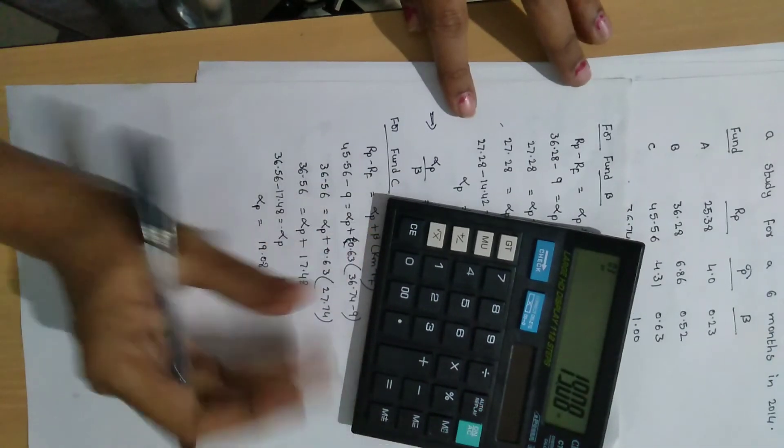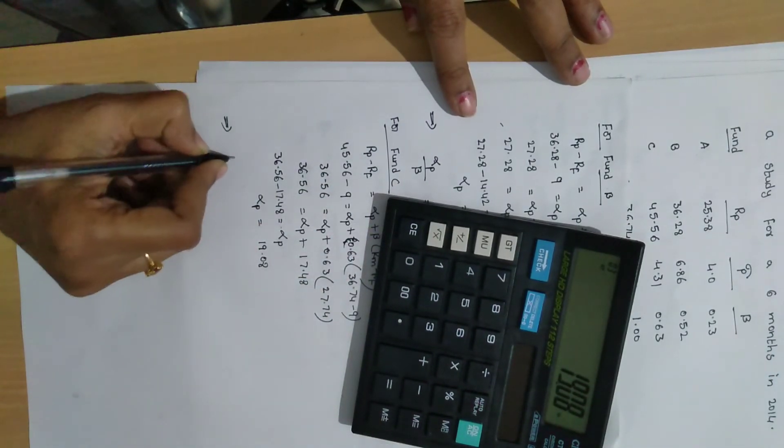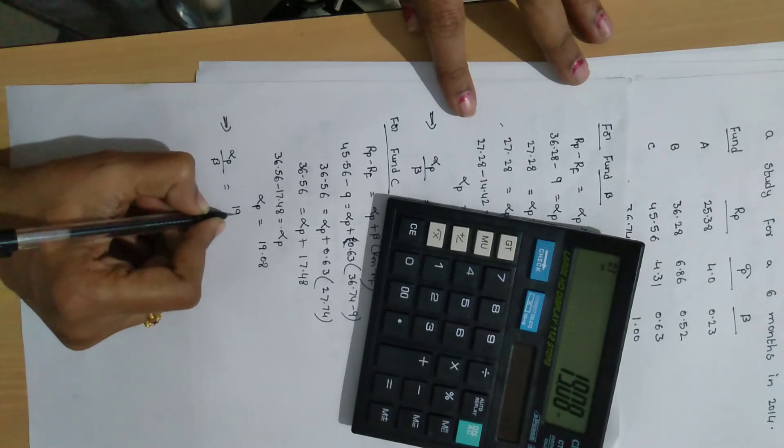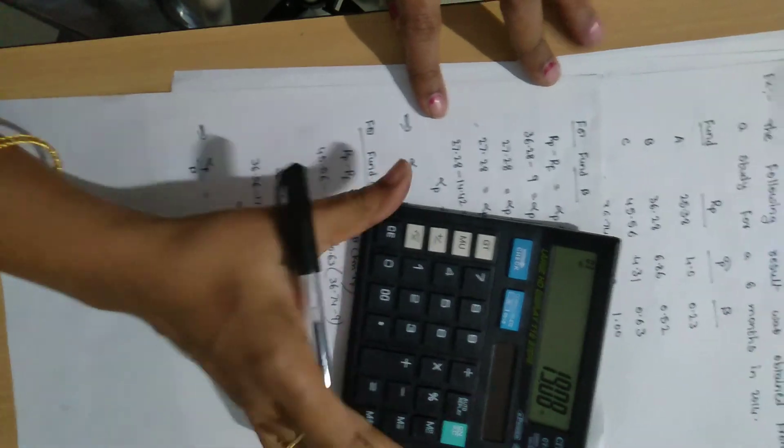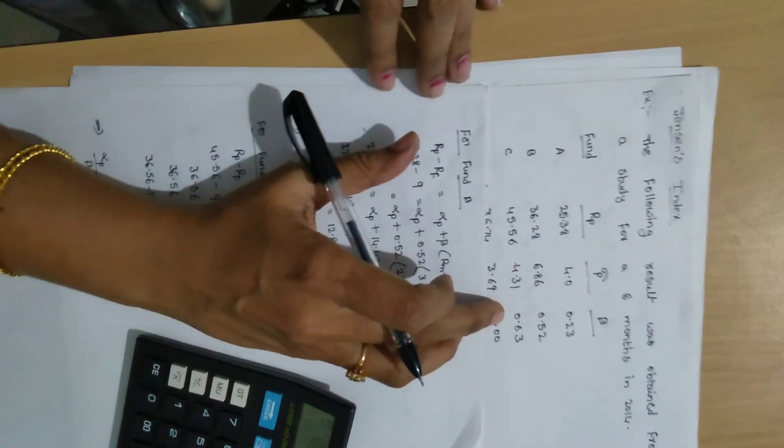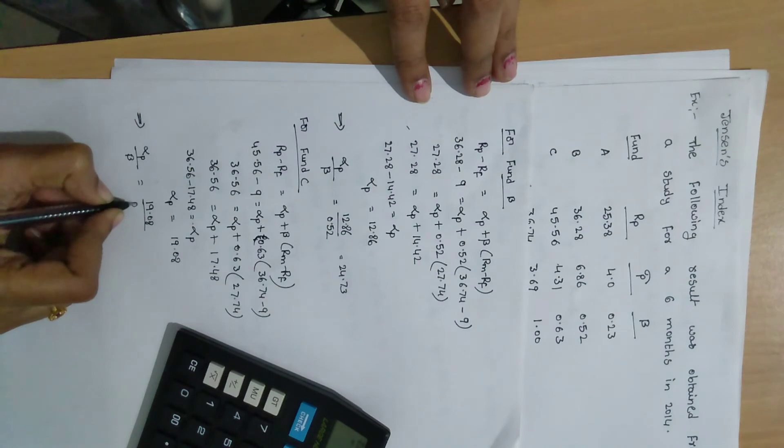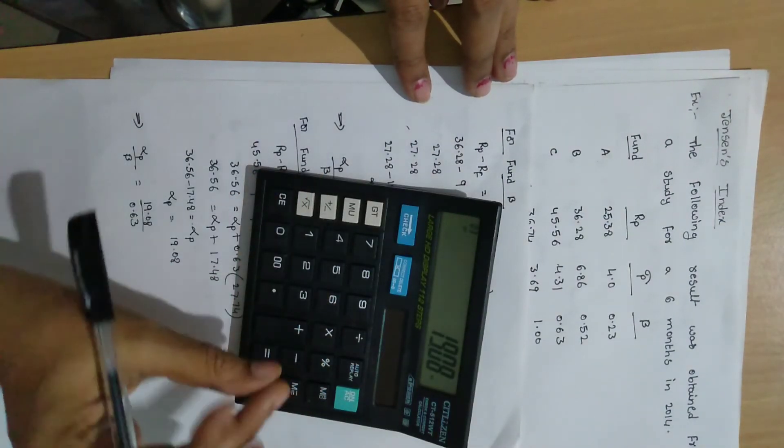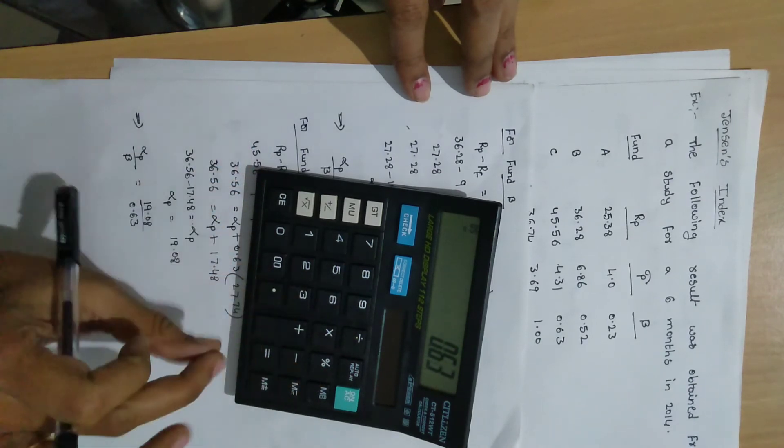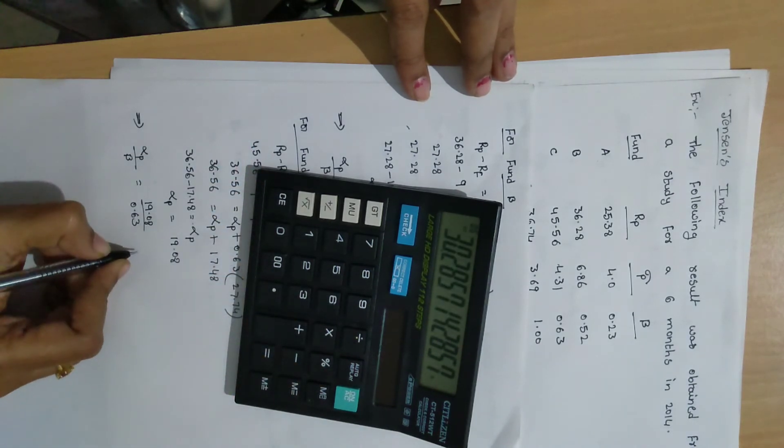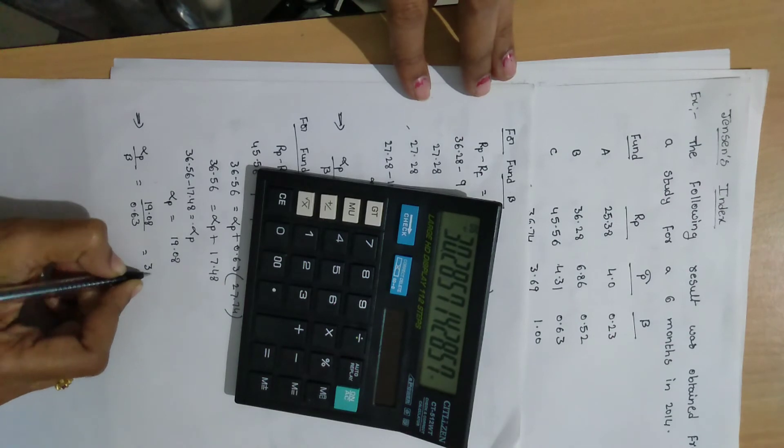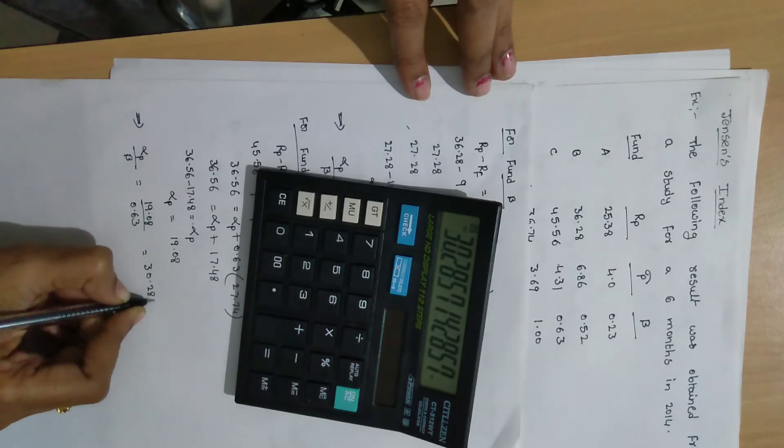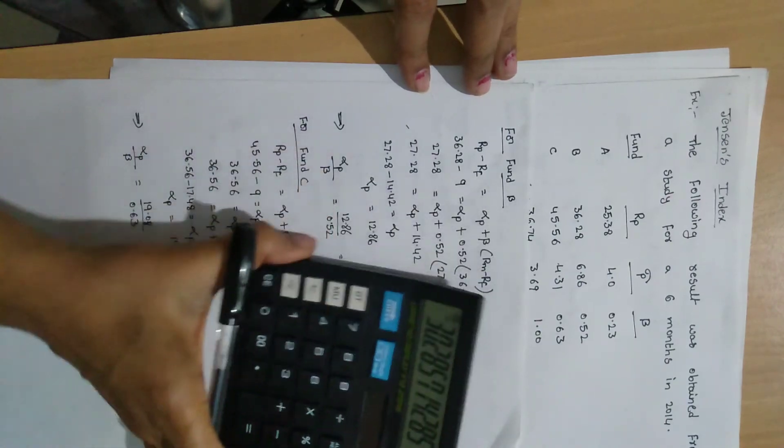For ranking, first you have to calculate the alpha P by beta. Here alpha P value 19.08 by beta value, C company beta value 0.63. Then 19.08 divided by 0.63 equal to 30.285. These are the values.